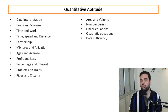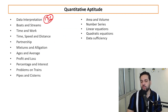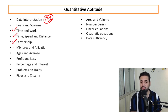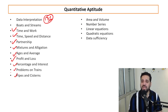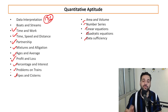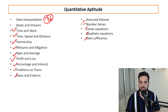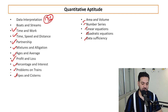In Quantitative Aptitude, there is a possibility of one DI set, but most probably there will be short questions from: Time and Work, Time Speed and Distance, Partnership, Mixtures and Alligation, Ages, Averages, Profit and Loss, Percentages, Simple and Compound Interest, Trains, Pipes and Cisterns, Number Series, Linear and Quadratic Equations, and Data Sufficiency. Note: Geometry and Trigonometry are not in the marketing syllabus, so you won't find questions from those topics.